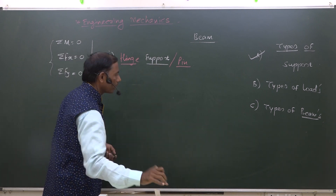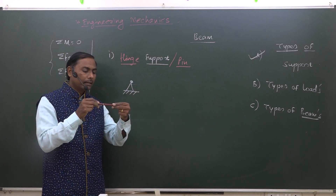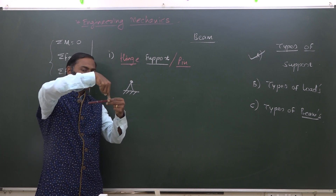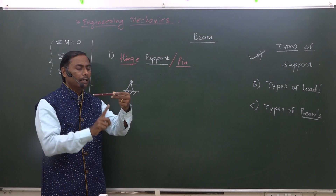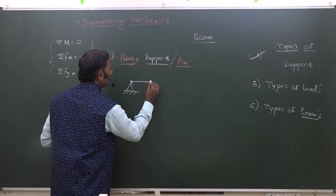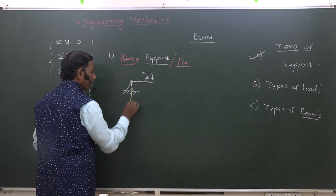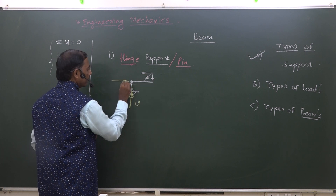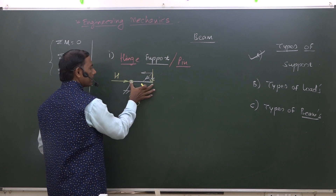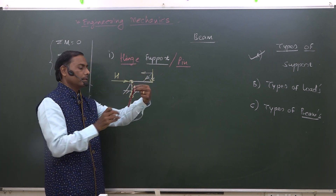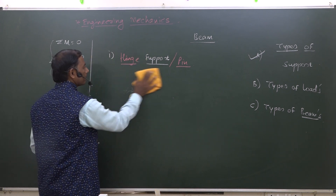For the hinge or pin support, it is pinned and will resist vertical applied load with a vertical reaction. If a force is applied in the horizontal direction, there will be a horizontal reaction. With an inclined load, there are two components which will be resisted. However, the limitation is: being a hinge or pin, if a load is applied at some distance causing rotation, there is no momentary action exerted by the hinge support.